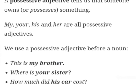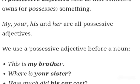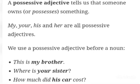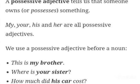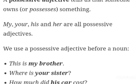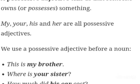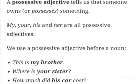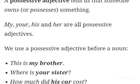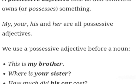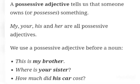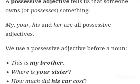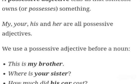Our last type is possessive adjectives. Possessive means owning something. The words like my, your, his, and her are possessive adjectives. Possessive adjectives are placed before a noun. Let's take some examples: 'This is my brother,' 'Where is your sister?' and 'How much did his car cost?' Words like my, your, and his are possessive adjectives — they are placed before the nouns brother, sister, and car.